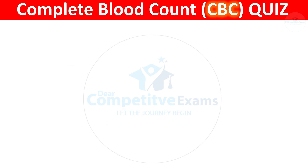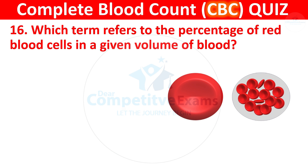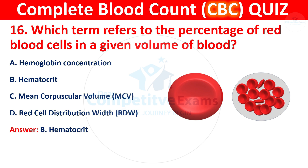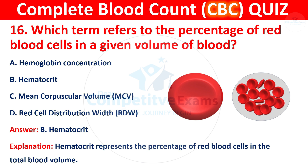Question 16: Which term refers to the percentage of red blood cells in a given volume of blood? Your options are hemoglobin concentration, hematocrit, mean corpuscular volume (MCV), or red cell distribution width (RDW). The correct answer is B, hematocrit. Hematocrit represents the percentage of red blood cells in total blood volume.